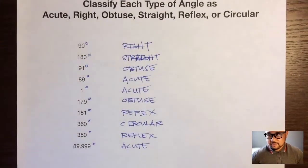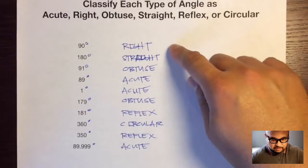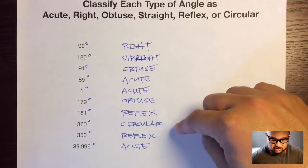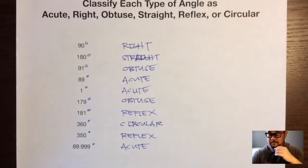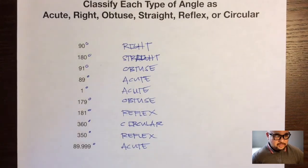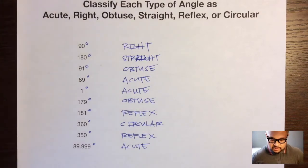So, there you go. Those are the six different types of angles. Let me just check that I got these right. Right, straight, obtuse, acute, acute, obtuse, reflex, circular, reflex, and acute. That's it. Those are the six different types of angles. Make sure that you know these by heart. If someone said a number, 5, acute. 90, right. 170, obtuse. 180, straight. 181, reflex. 360, circular or complete. That you can do it that fast. So that's it. Have a great day. Those are the six types of angles.